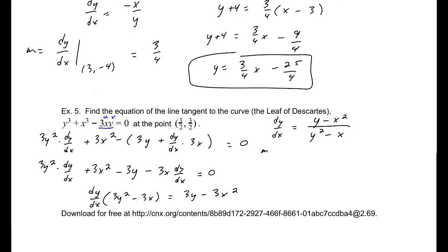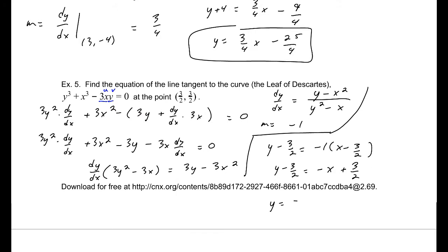Now evaluating that at the point 3 over 2, 3 over 2, I get a slope of negative 1. All of that to get our slope. So y minus 3 over 2 equals negative 1 times x minus 3 over 2, 3 over 2, negative x plus 3 over 2. And then adding 3 over 2 to both sides, we get y equals negative x plus 3. And there's the equation of the line tangent.